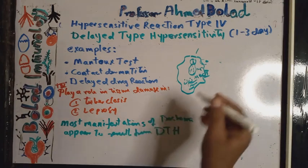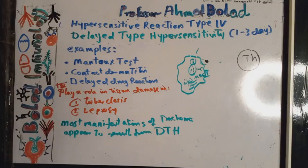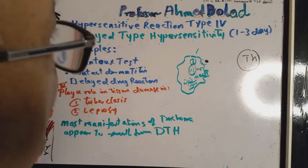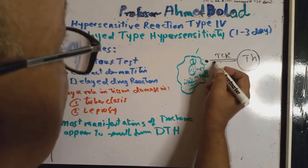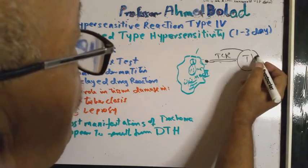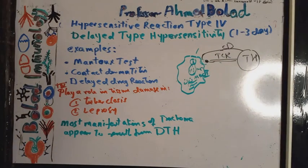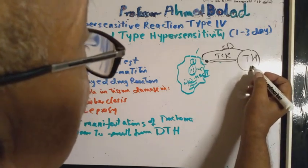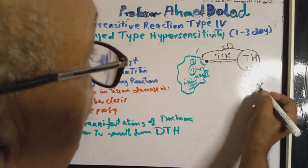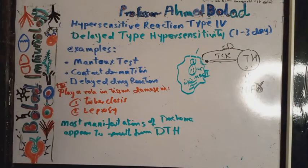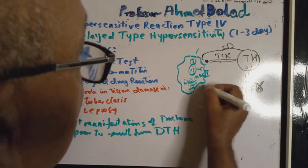T Helper number 1 can see peptides — it has no capacity to see tertiary proteins, but it can see peptides or primary proteins. Through its TCR, it interacts with the peptide. T Helper number 1, known as CD4, will interact with the MHC complex. This leads to activation of T Helper number 1, and activated T Helper number 1 will produce a cytokine known as interferon gamma.